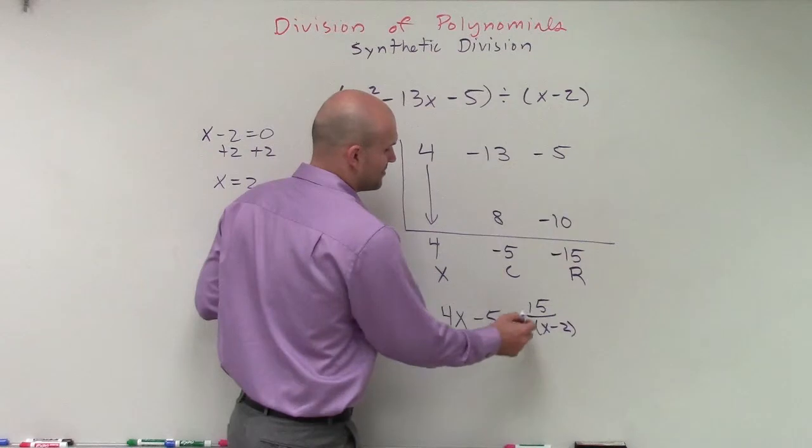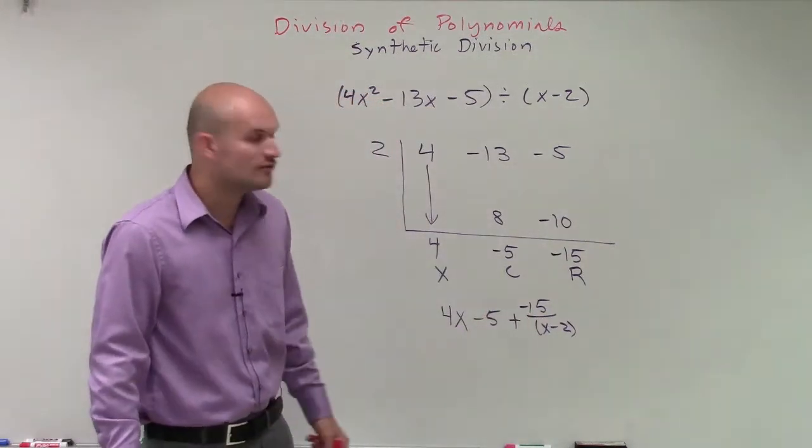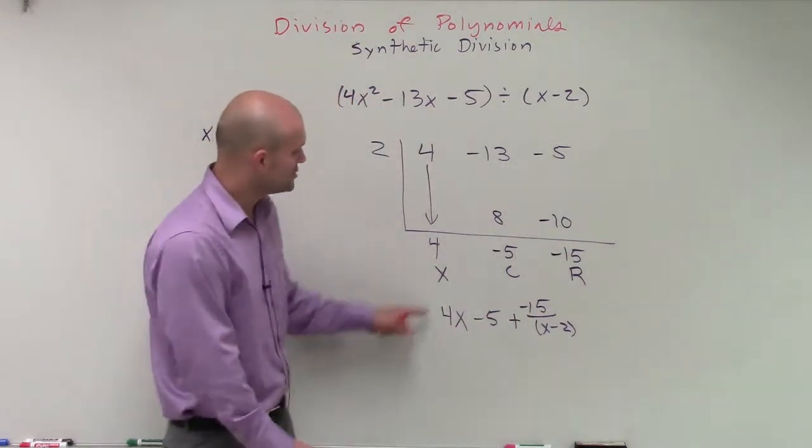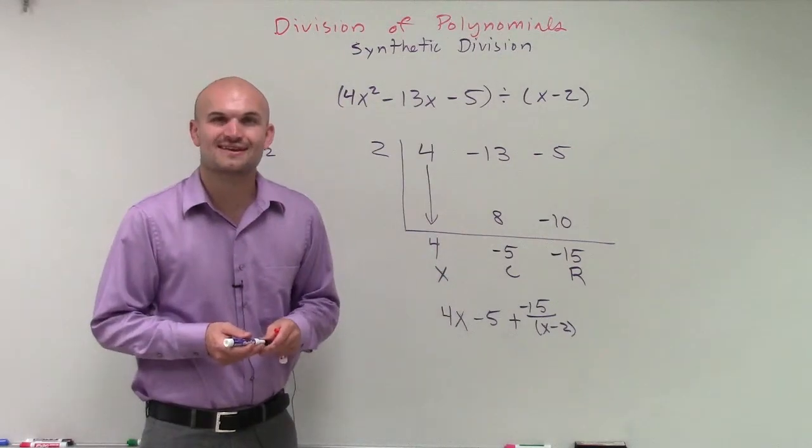A lot of times, I'll just write plus a negative 15 over x minus 2. So there you go, ladies and gentlemen. That is our quotient by using synthetic division. Thanks.